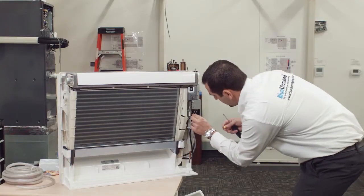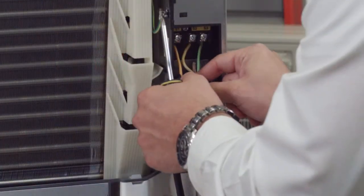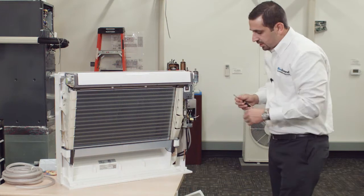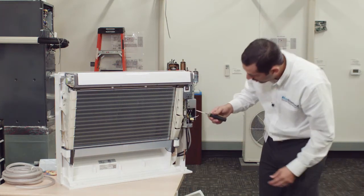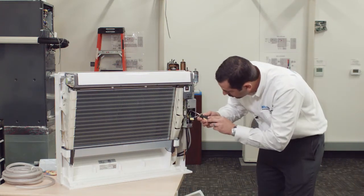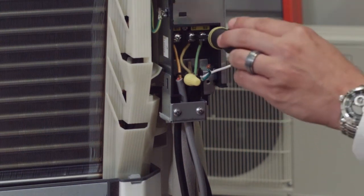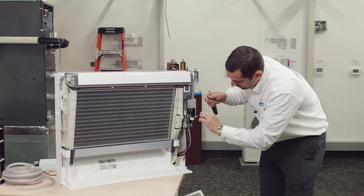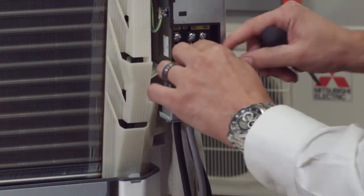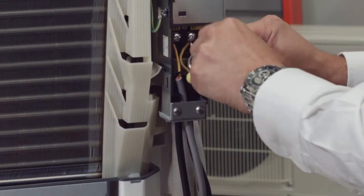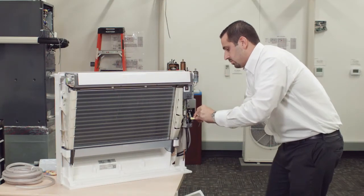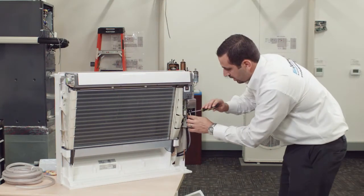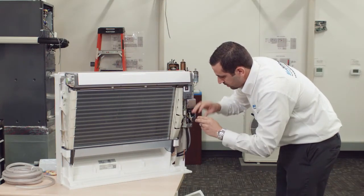Our second leg of power is going to install here on the S2 terminal. You'll notice that you're going to have your S2 wire from your condenser also installed on this terminal. And lastly, we'll take this green wire installed on this ground terminal right here.